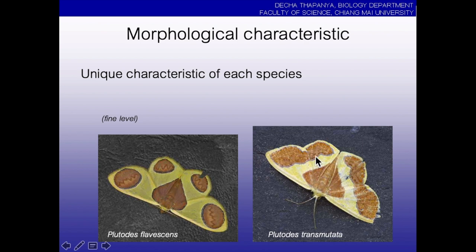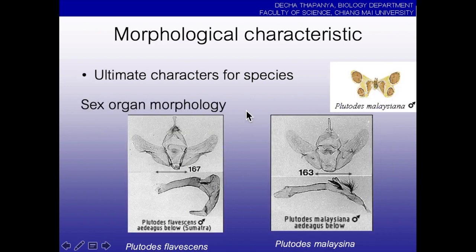Each species contains different characters, and different characters give them different names. Each species contains a unique characteristic. For insects, we usually use the sex organ or genitalia to identify to the species level.